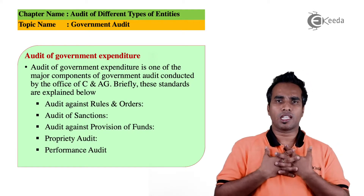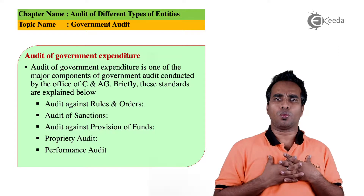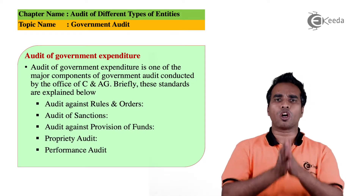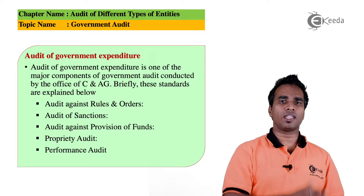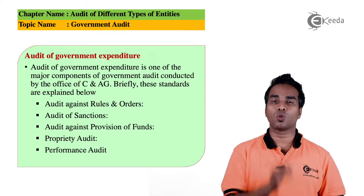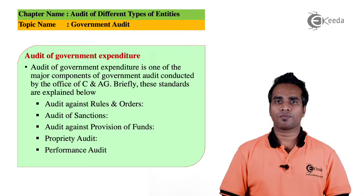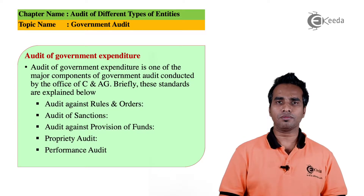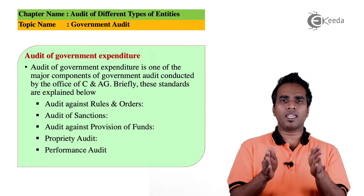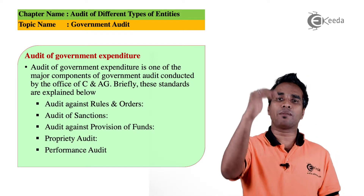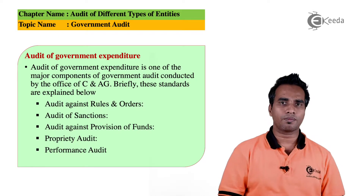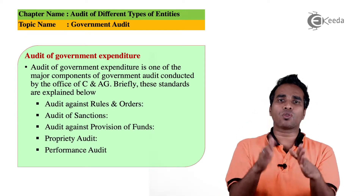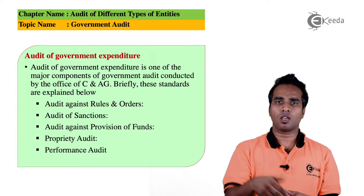Audit against the Rules and Order: the government's offices and employees — whoever the government has tasked — must follow the rules and order properly. Second point relates to Audit of Sanctions: we check the provision of sanctions, verifying whether the amount is sanctioned by the appropriate authority or not.